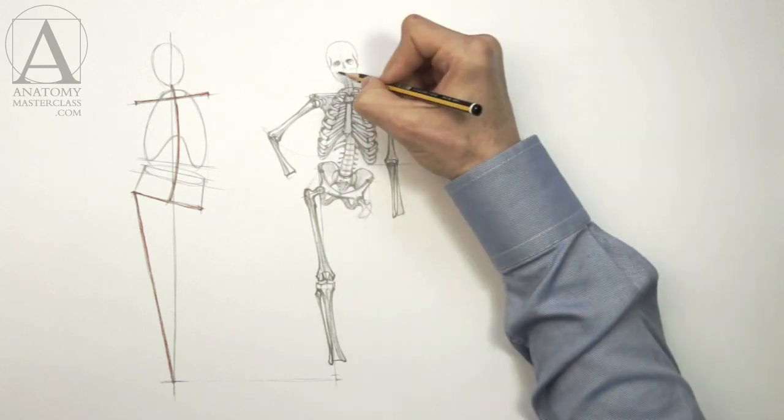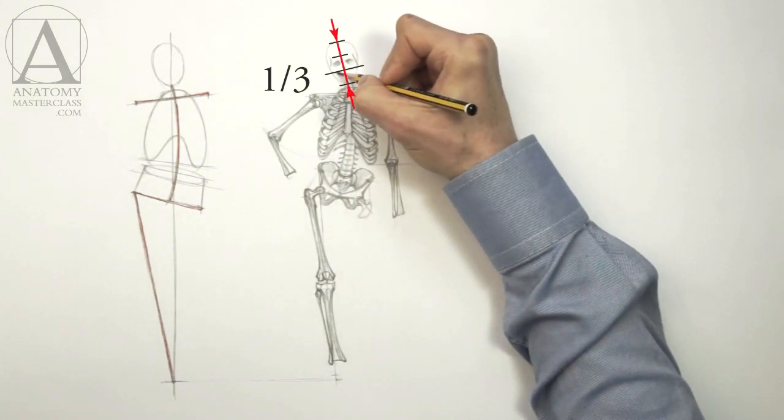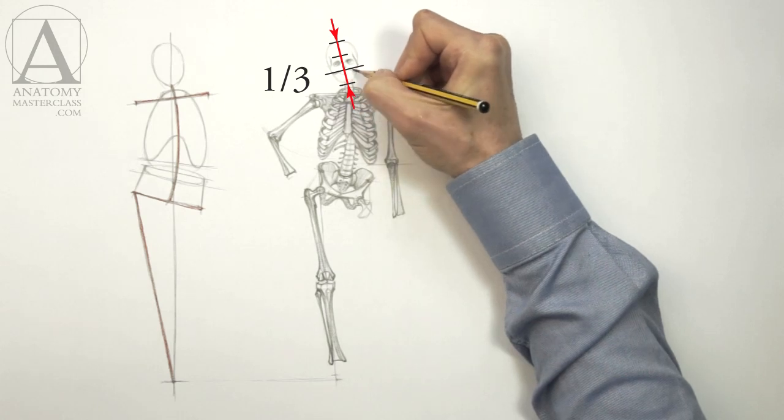The lower edge of the cheek bone and the root of the nose lie on the same line, which is a third of the way from the lower edge of the skull.